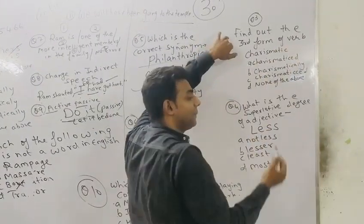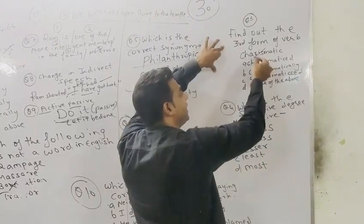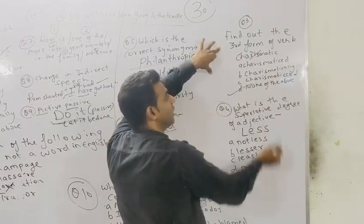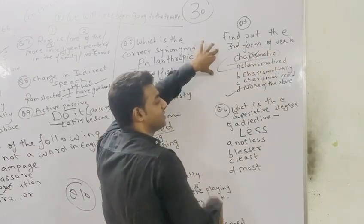Find out the third form of verb. All of you should know this is not a verb. Yes. Write D - none of the above. This is called an adjective: charismatic.